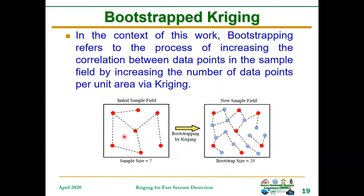For example, on the left-hand side, the data points are sparse, meaning they are less correlated. By bootstrapping using Kriging, we now have more points than what we had on the left — all the blue points are the bootstrapped points. The correlation increases due to shorter distances between those points. By increasing the correlation in this way and passing the data into the DNN, the DNN will spend less time learning the intrinsic relationships within the data points, and hence that will result in faster training.